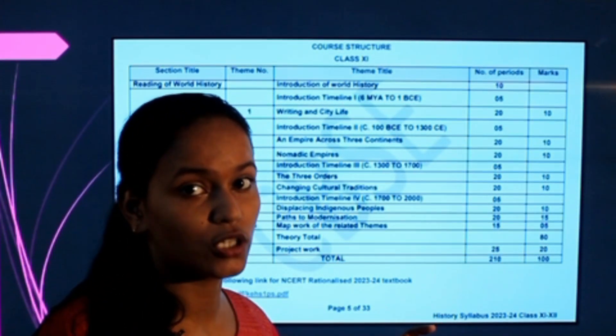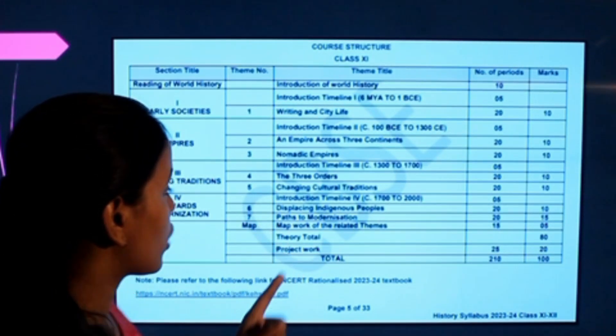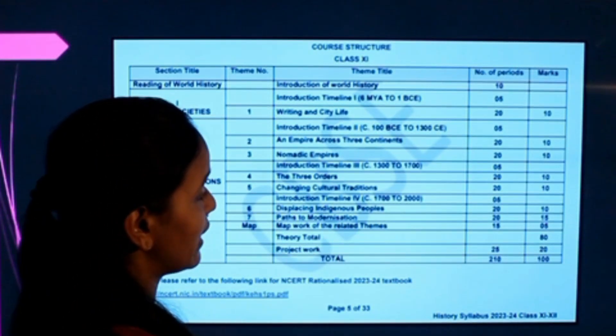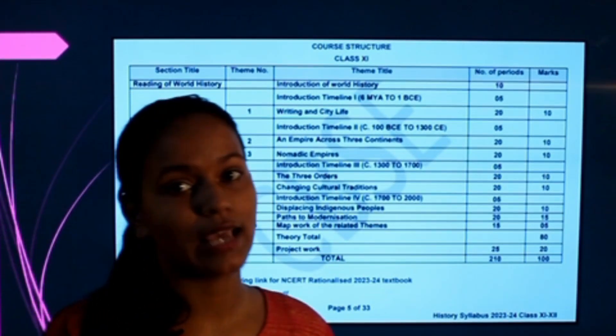And it will be of course helpful because I have explained in story form. So next are the Paths to Modernization and Displacing Indigenous Peoples. This is 10 and this is 15. Then 5 marks are coming from the map.